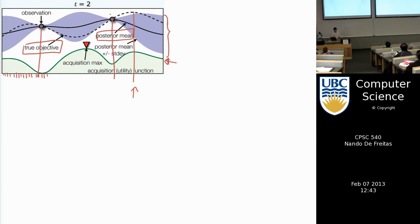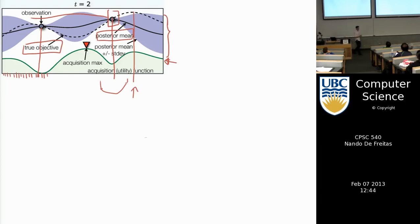Since one observed point has a higher reward than the other, we should prefer to look near that point — it already gave a higher return. The danger is that there's another alternative somewhere out there that we don't know about, which might actually be very good.